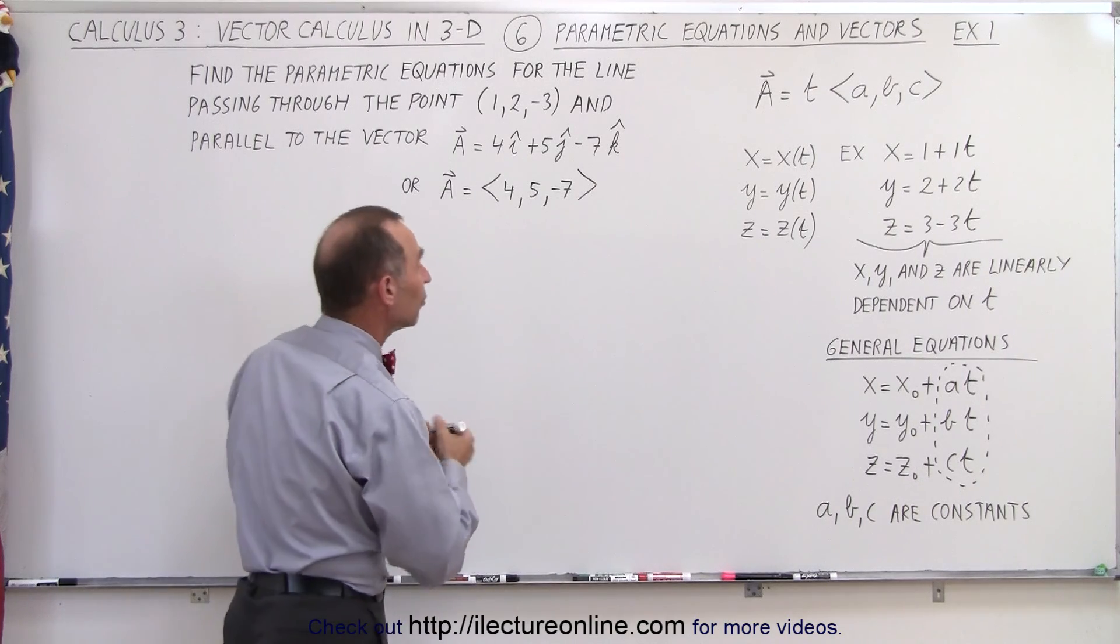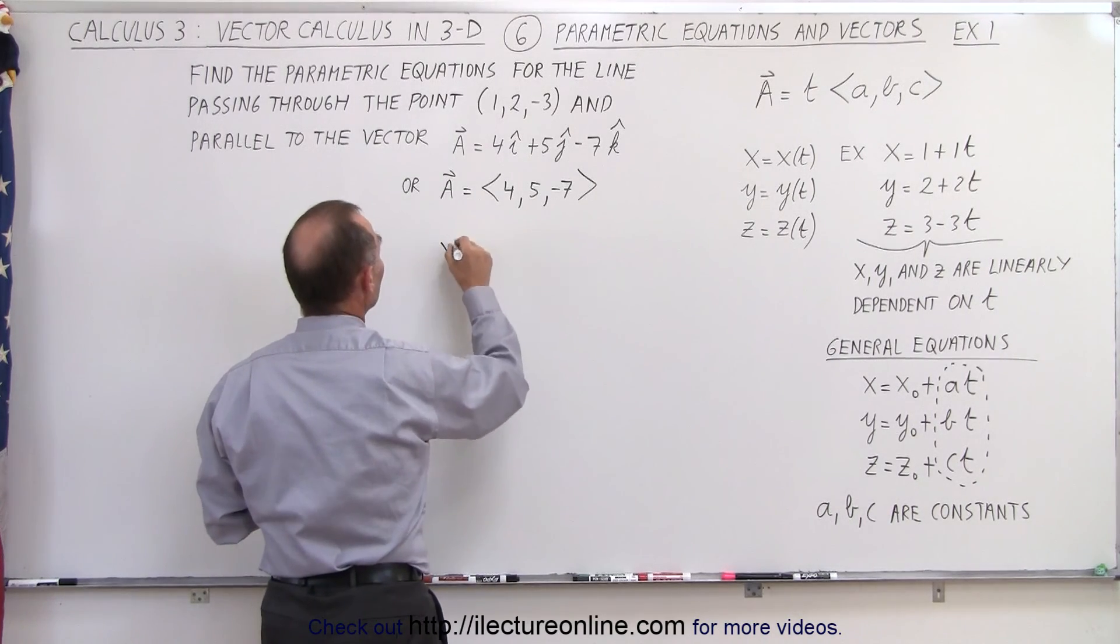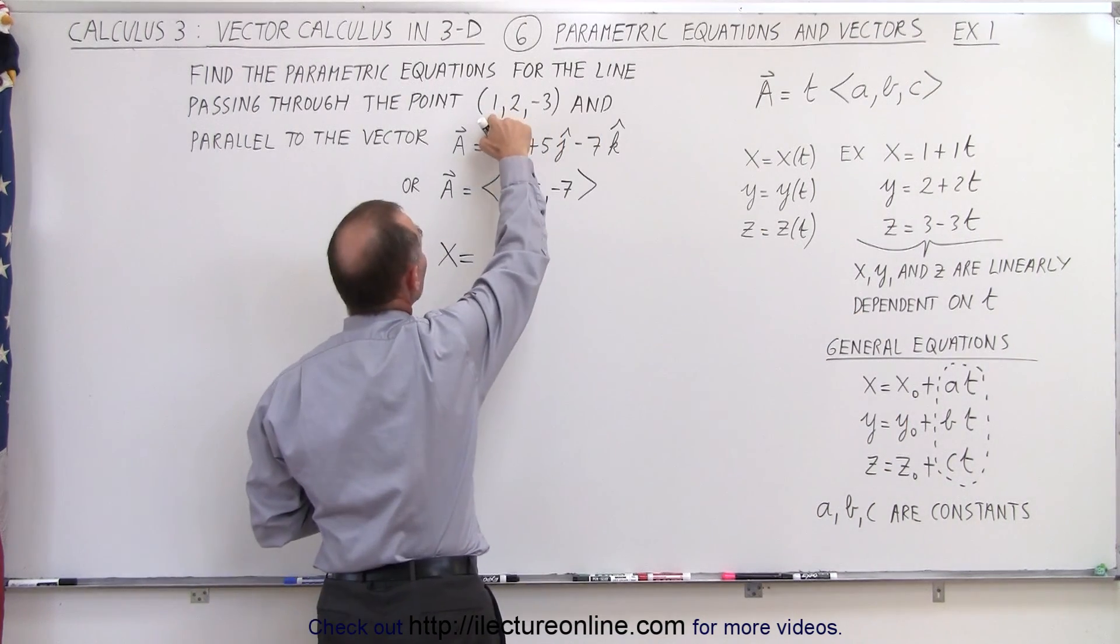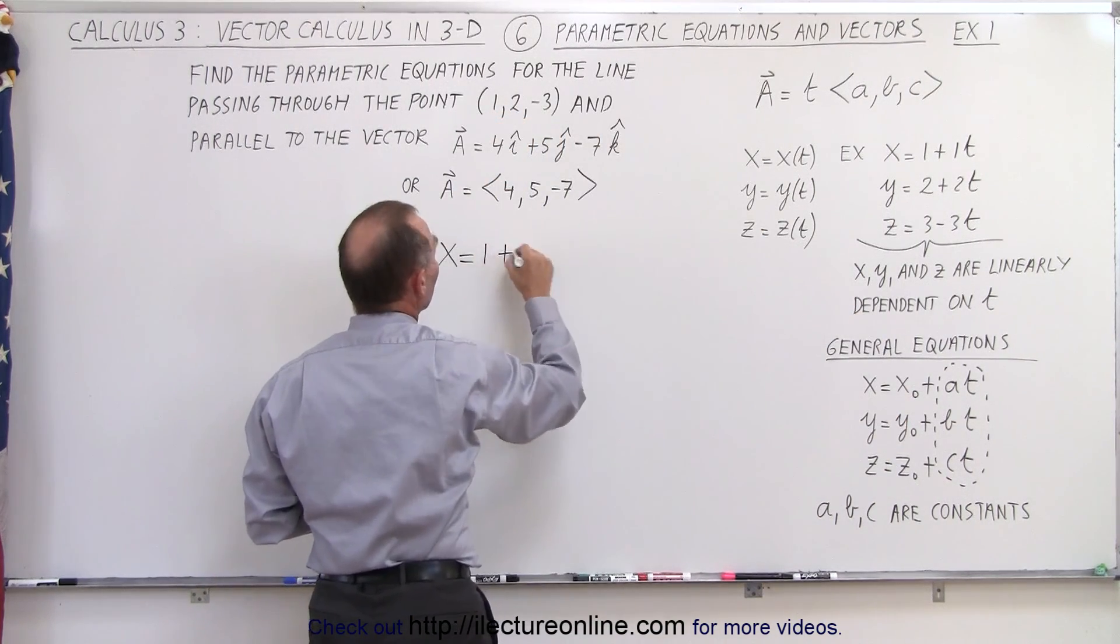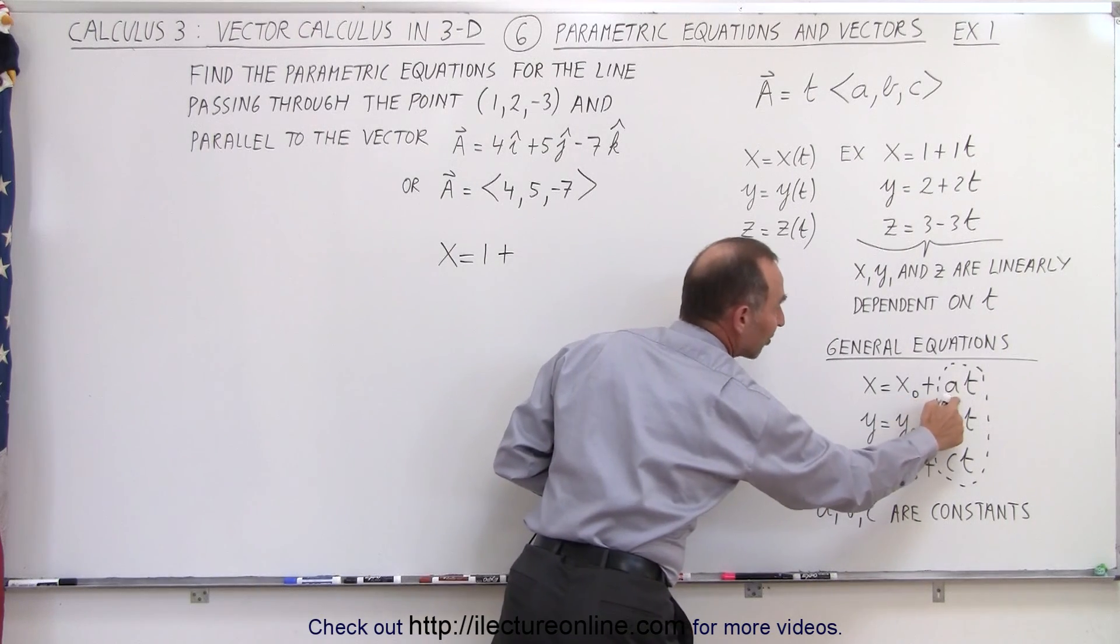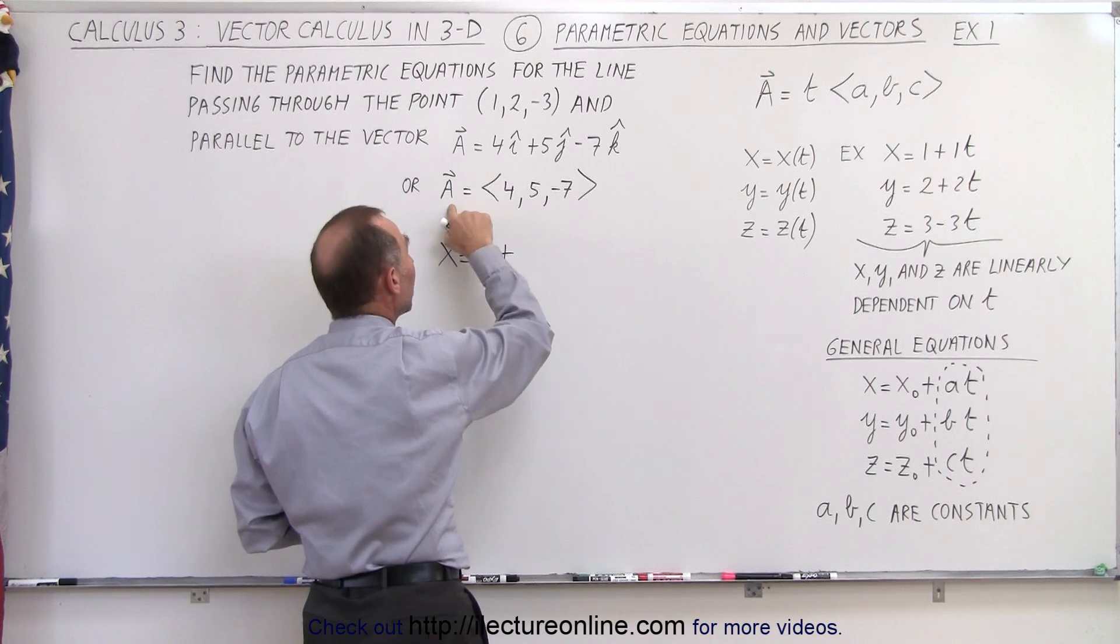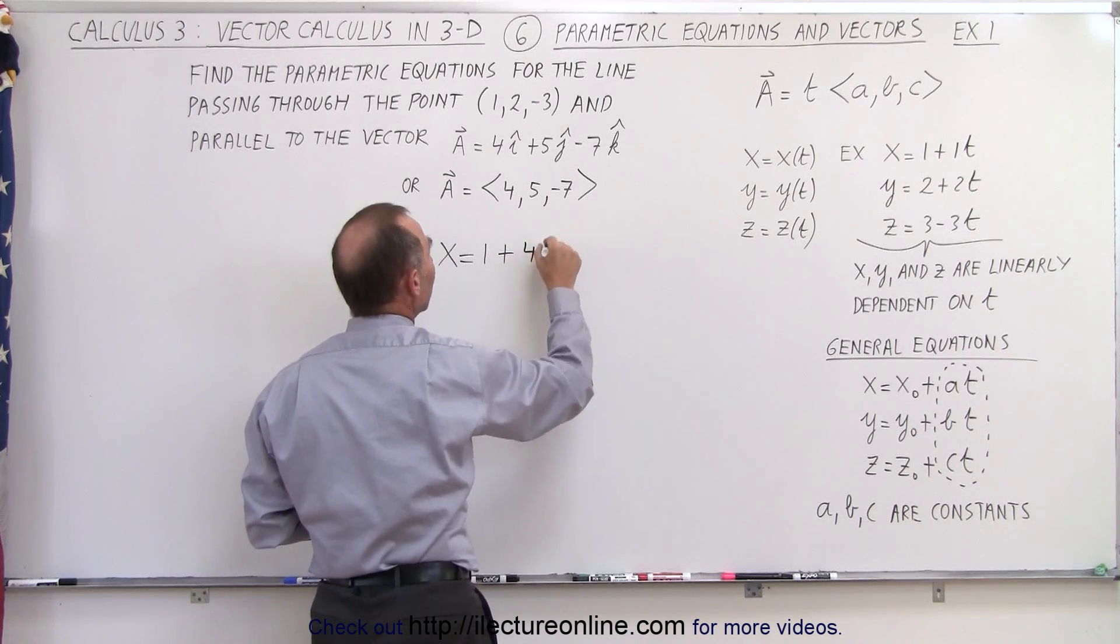So let's go ahead now and write these variables. So we have x is equal to some initial position in x, which is defined by this point right there, plus the slope, how fast x is changing, which is defined by the x component of the vector a, so that would be 4 times t.